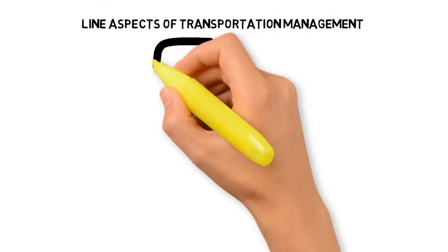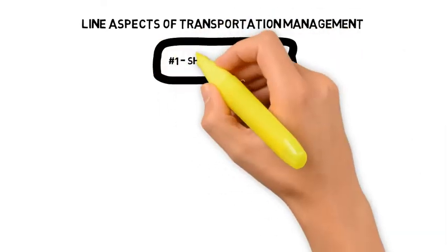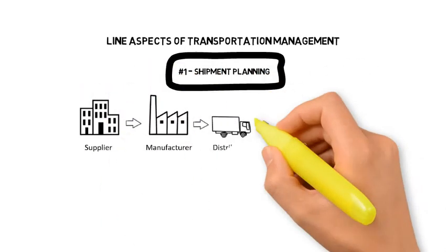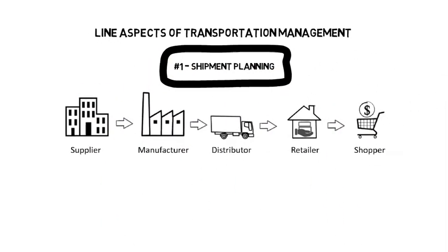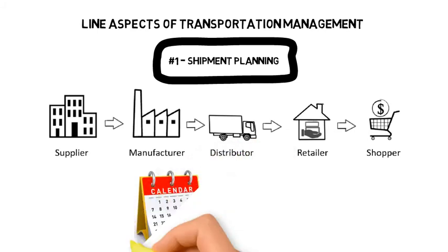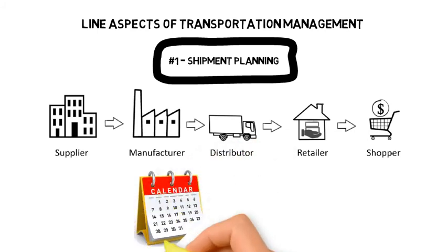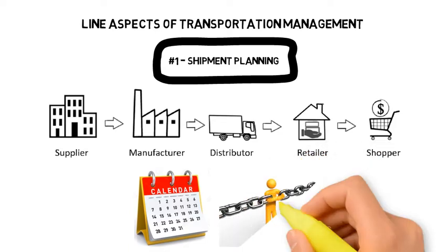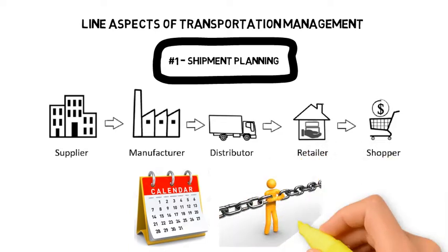Moving on to the line aspects of transportation management. Top on the list is shipment planning. One needs to know the exact schedule of required shipments — when are inbound shipments of raw materials due, and when are outbound shipments of finished goods due? One also needs to understand the constraints of each stakeholder. For example, the size and availability of loading docks will limit the number of containers which can be parked at the facility, and the size of the staging area and storage capacity will also affect the goods which can be moved at any given time.